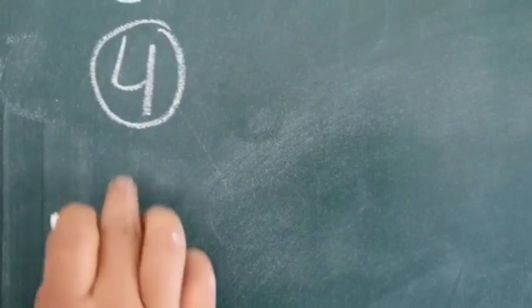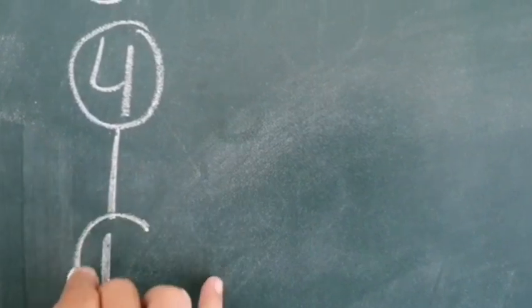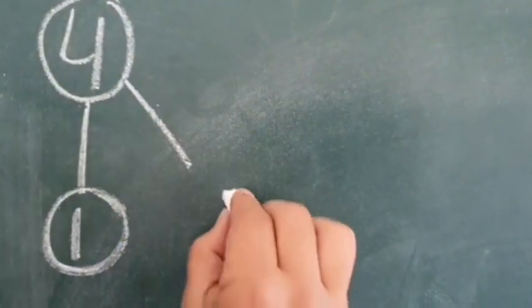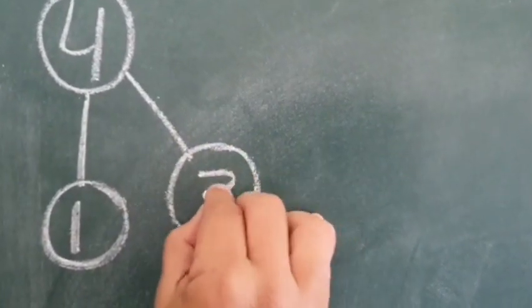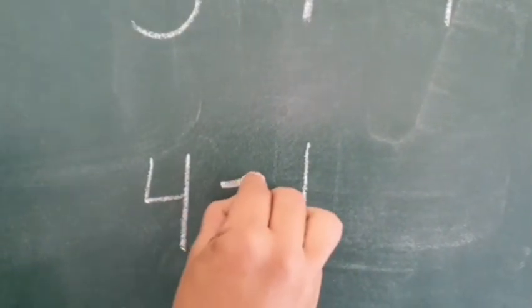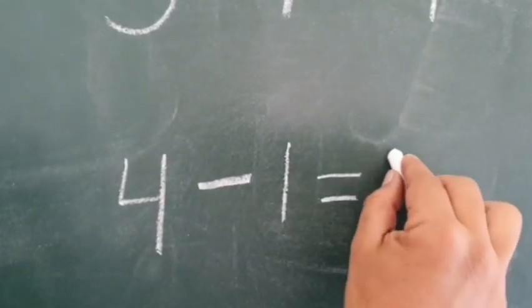There were 4 pigeons, 1 pigeon flew away, and there were 3 pigeons left behind. 4 pigeons, 1 flew away — this means 4 minus 1 is equal to 3.